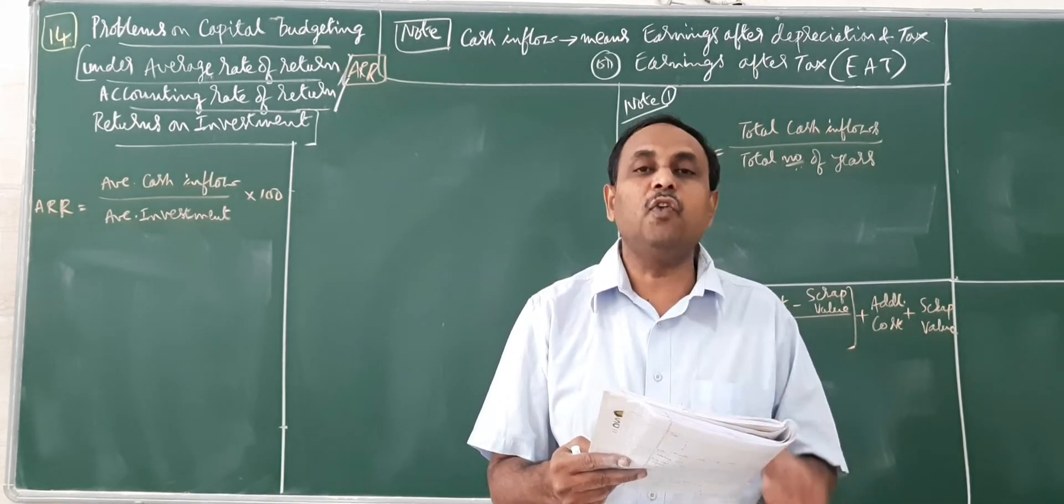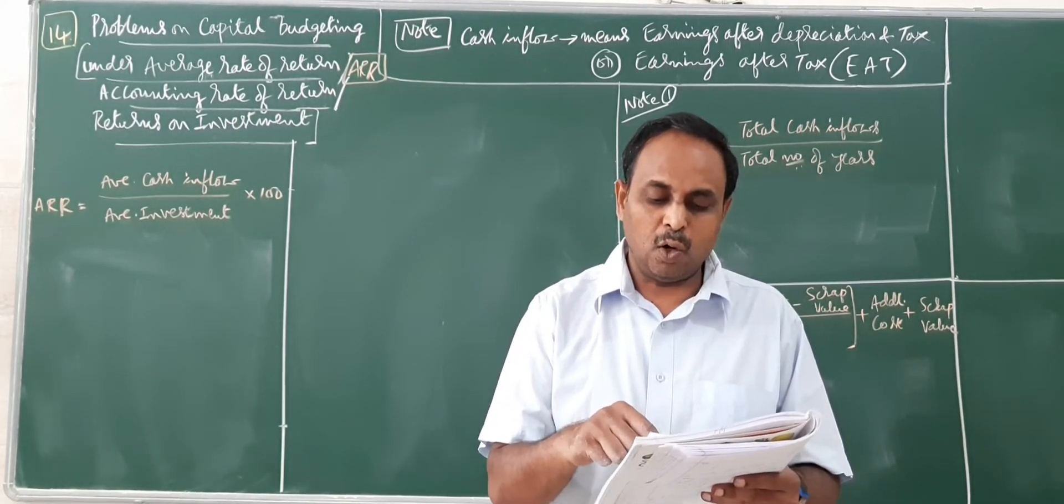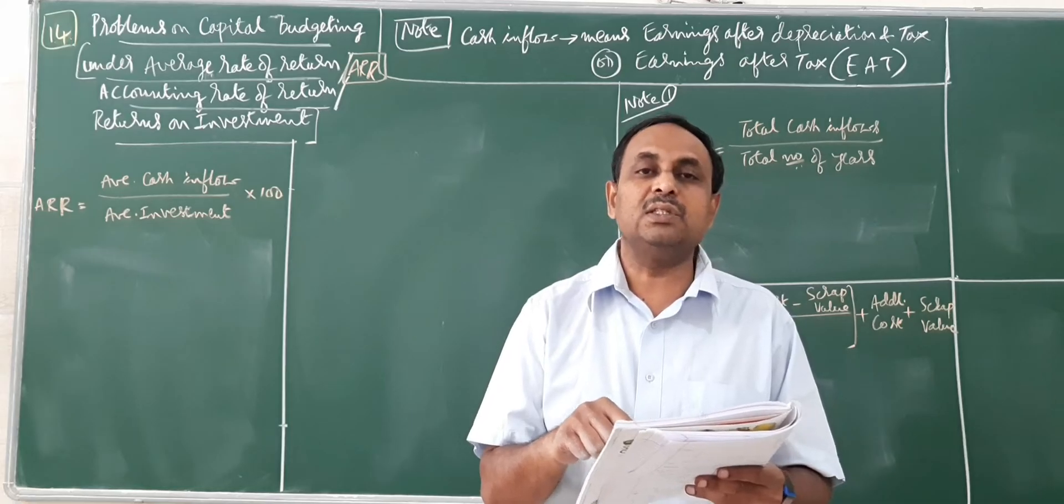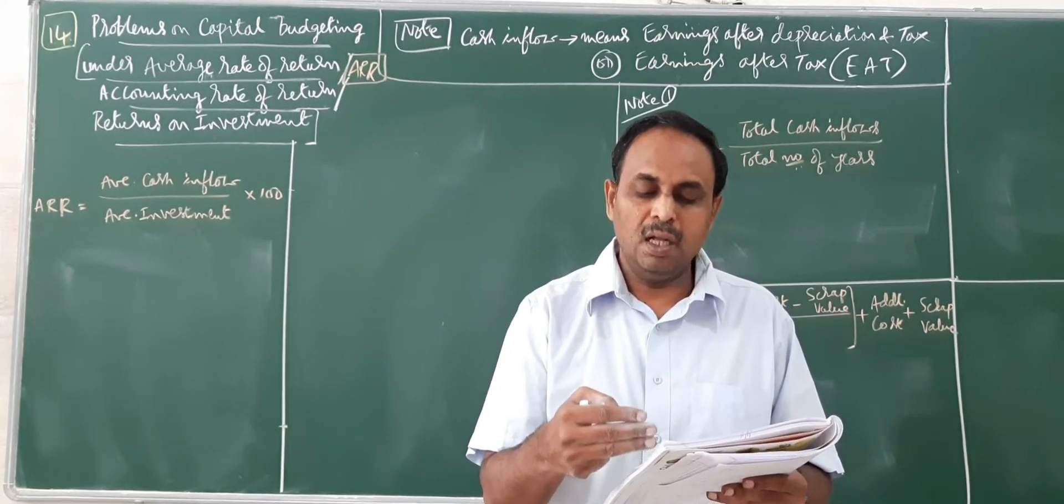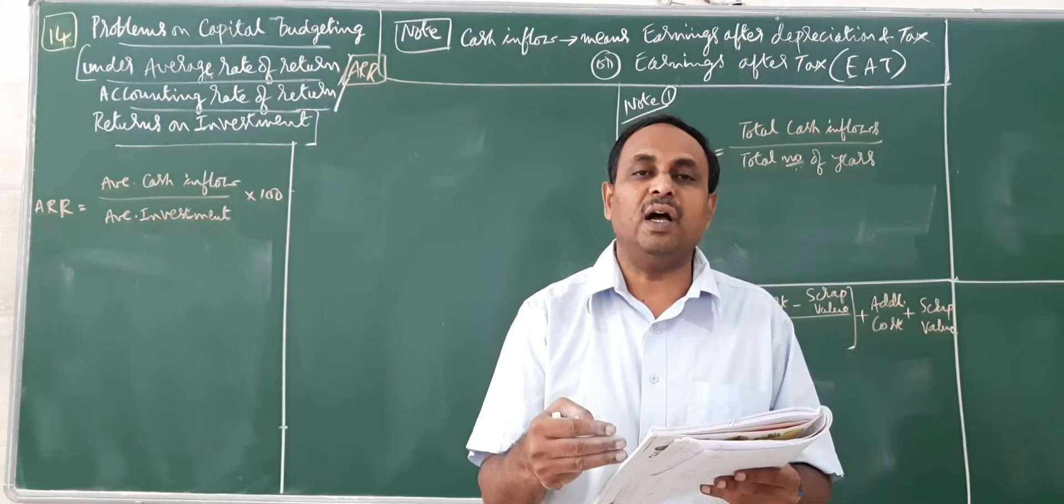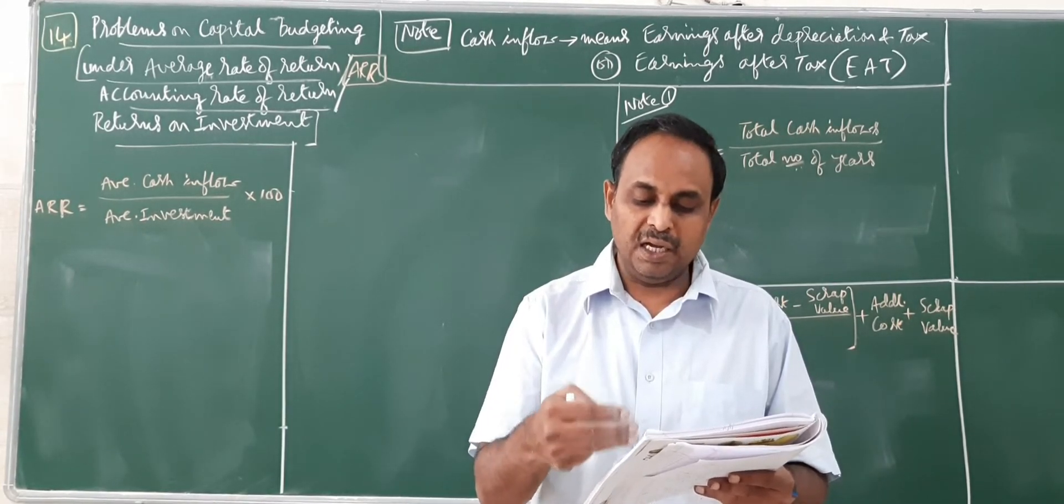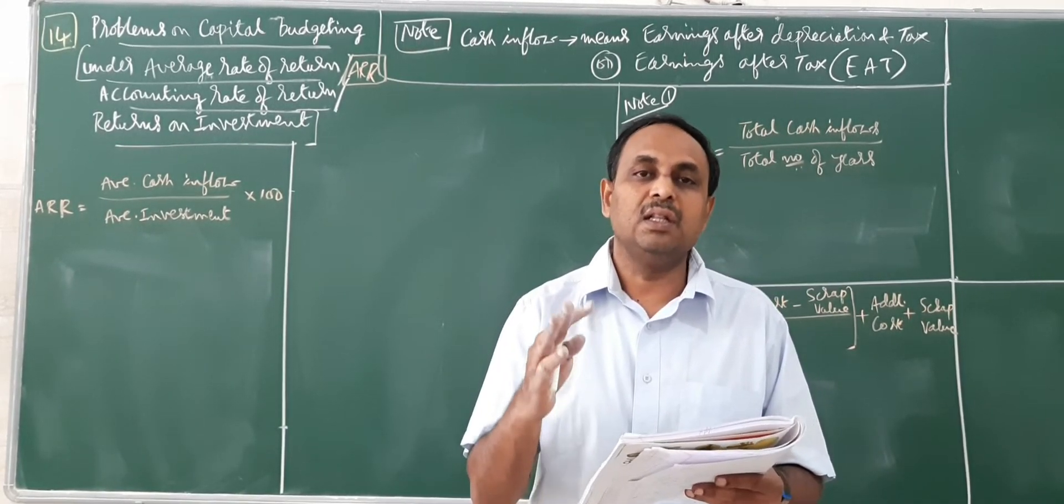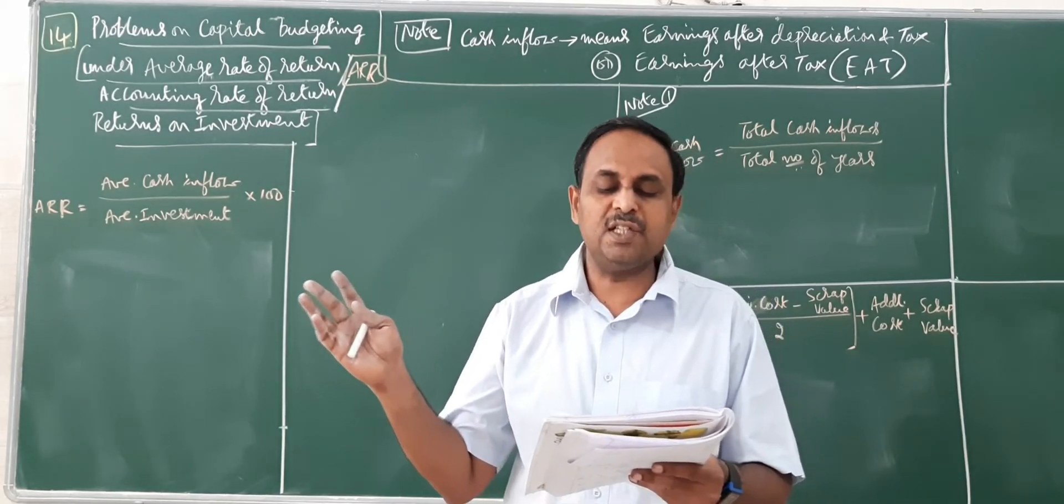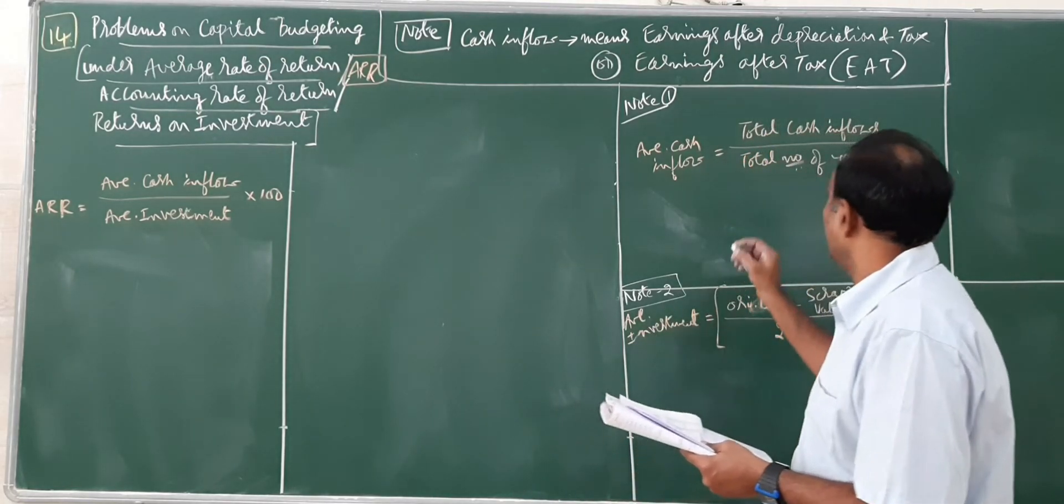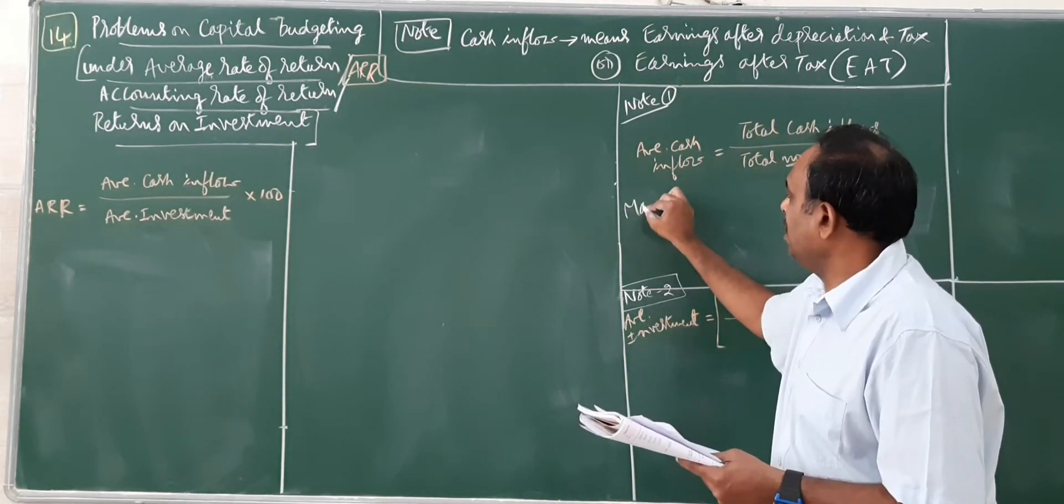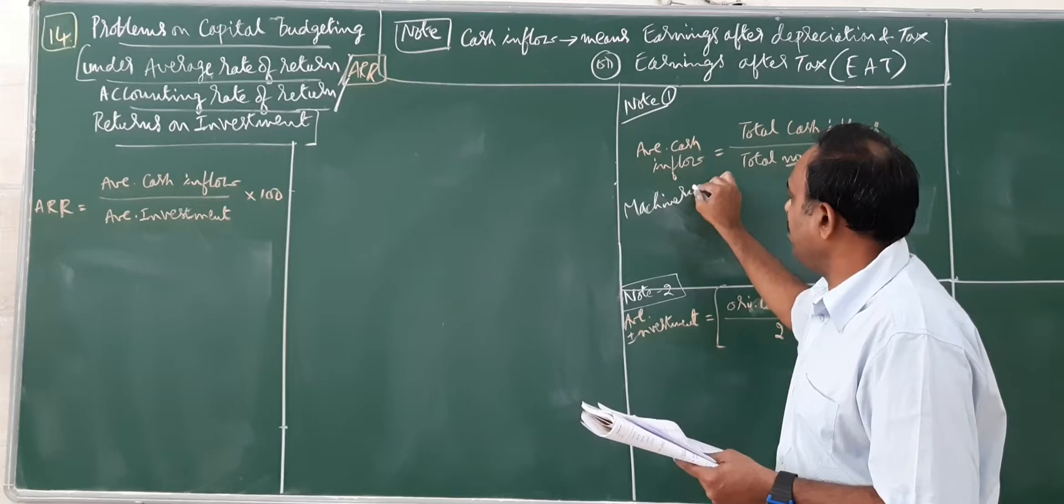Only change here is the inflows. For A, you are going to find starting from 3,375 increasing year after year. For B, it is 11,335, 375 in the beginning. It keeps on reducing year after year. That's the only change. So we'll see which machinery is preferable.